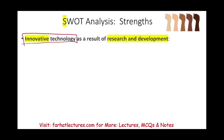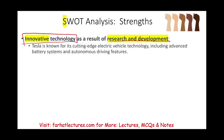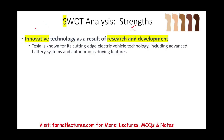Many companies could have technological innovation, but I'm going to be specific about Tesla. As a result of research and development — which is itself considered a strength — Tesla is known for its cutting-edge electric vehicle technology, including advanced batteries and autonomous driving features. If you lack innovation, technology, and research and development, those become weaknesses. Anything that's a strength, if lost, becomes a weakness, and vice versa.